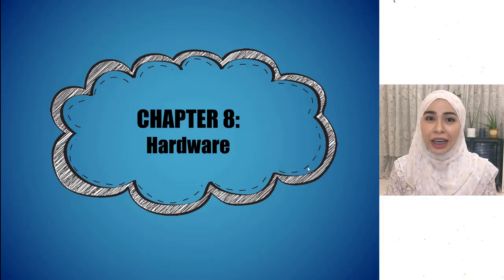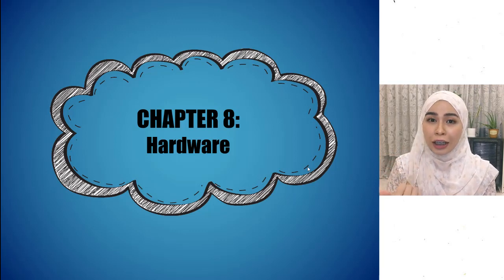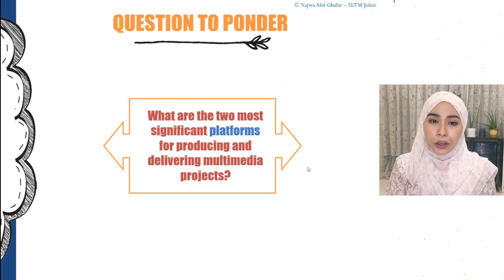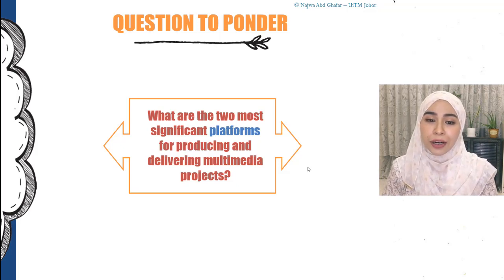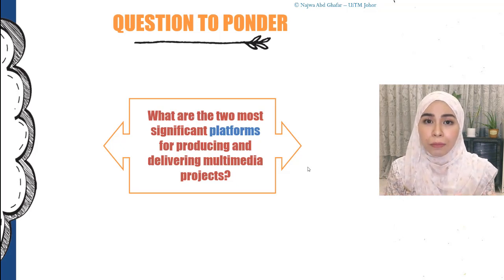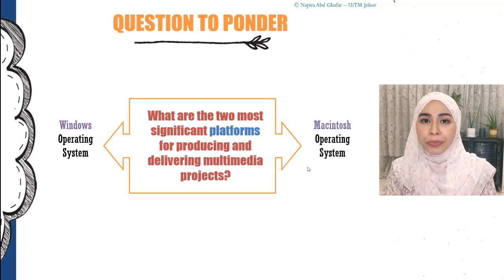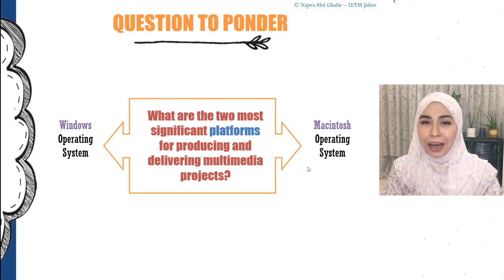Assalamualaikum class. Today we'll be going into Chapter 8 on hardware. As we all know, a computer system is made up of two parts: hardware and software. The first question I want to ask is: what are the two most significant platforms for producing and delivering multimedia projects? A platform is also known as an operating system. The two most significant ones that people usually use are Windows and Macintosh.